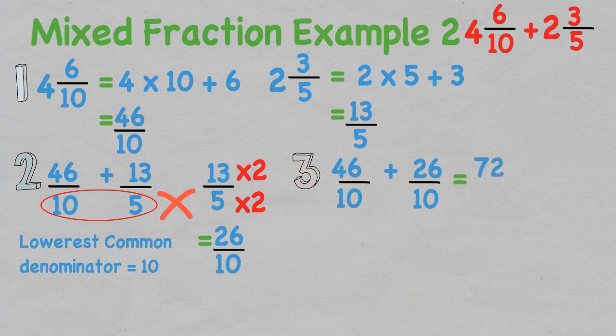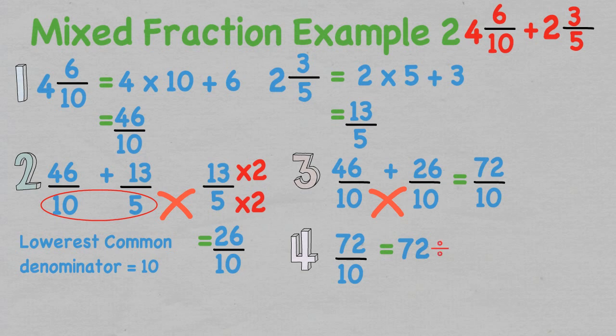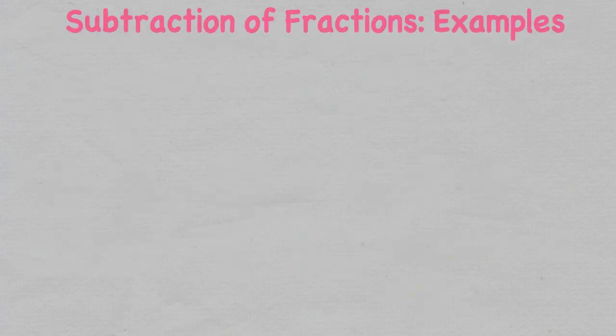Now the two improper fractions are alike, so we add the numerators together. This equals 72 over ten. We can simplify this improper fraction into a mixed fraction by dividing the numerator by the denominator: that is seven with two left over. So our final answer is seven and two over ten.